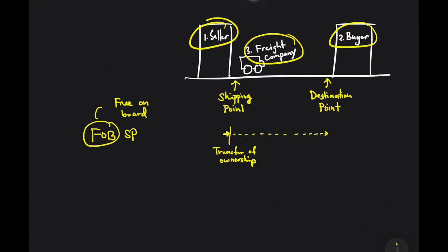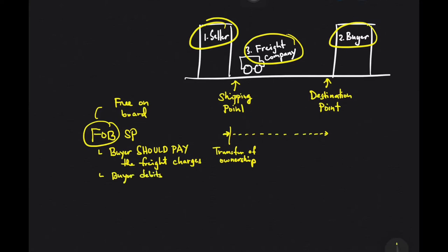Seeing that it is the buyer who pays most of the transportation, this implies that under FOB shipping point, it is the buyer who should pay the transportation cost or the freight charges. Journal entry wise, the buyer debits freight in — freight in is the account title used by the buyer whenever the buyer pays the transportation.